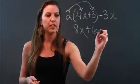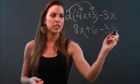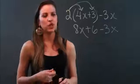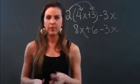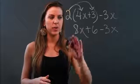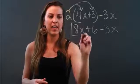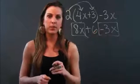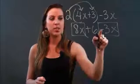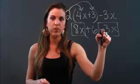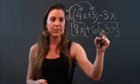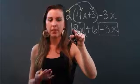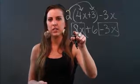Now I'm bringing down anything I didn't use, which is my minus 3x. Now I'm looking to combine like terms. Like terms have the same variable and same exponent. The only like terms I see are 8x and negative 3x. The most important thing about combining like terms is that you take the sign before the term — every term carries the sign before it, think of it as its little leash. The 8x doesn't have one because it's the lead coefficient, which just means it's positive.